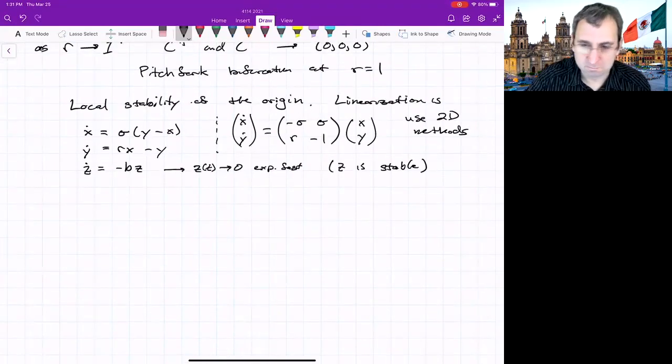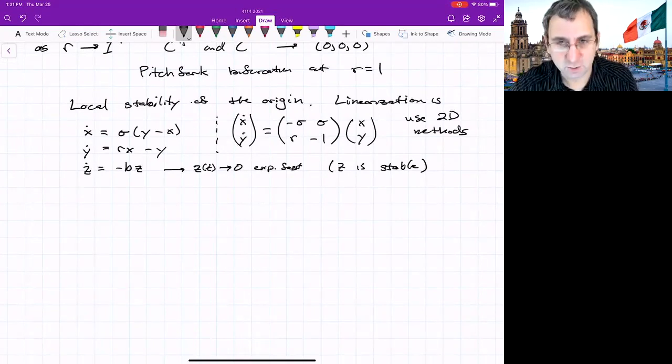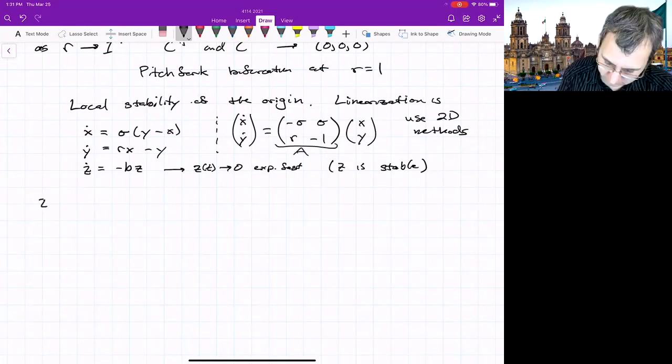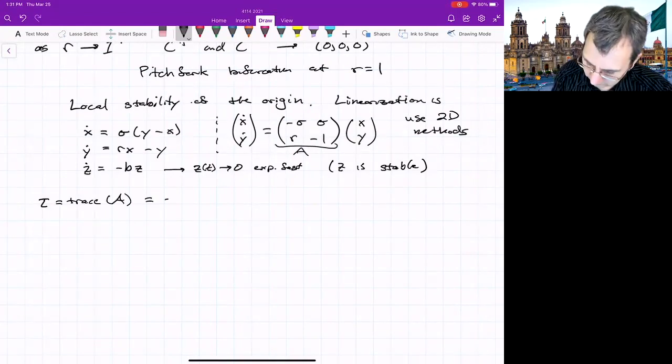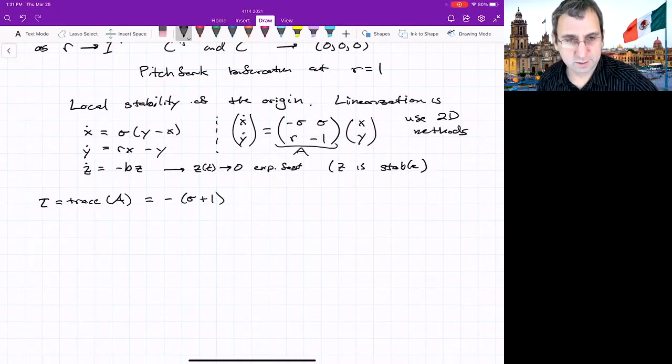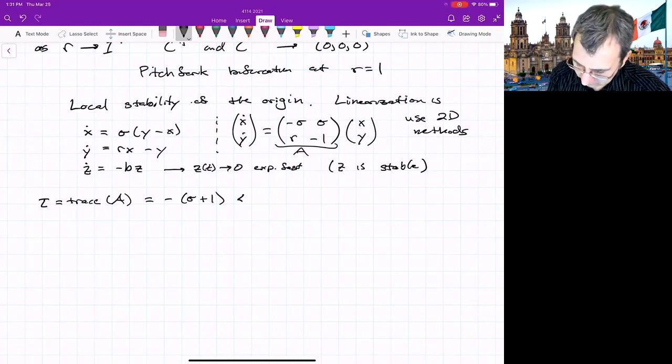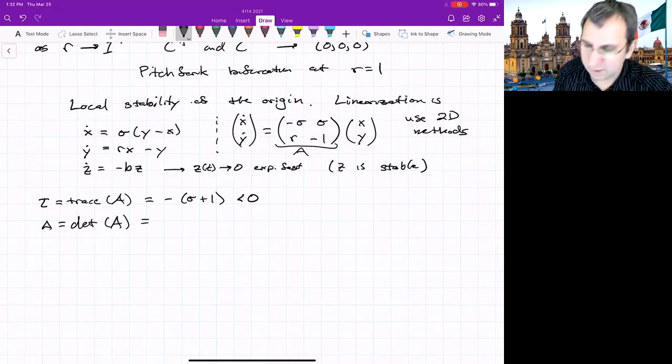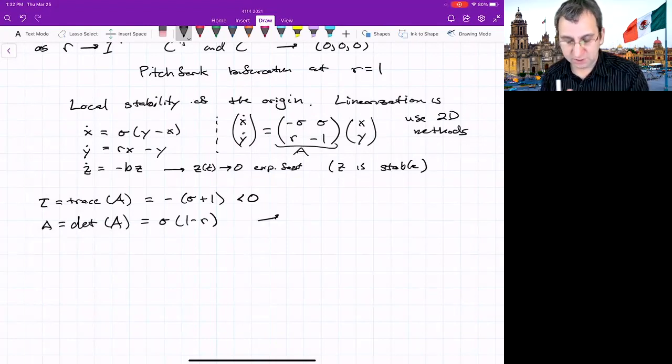If we put it in the form that we've done for analyzing 2D systems, what do we get? We get the matrix [-sigma, sigma; r, -1] times (x,y). Use our 2D methods. So we already know that the z direction is stable. What about x and y? The way that we have done this is we'll look at the trace of that 2x2 matrix and the determinant. The trace is negative sigma minus 1. Sigma is always positive, so that means this is less than 0. What about delta? Delta is the determinant of A, and that is sigma(1 minus r).